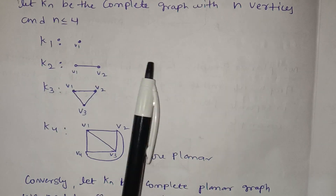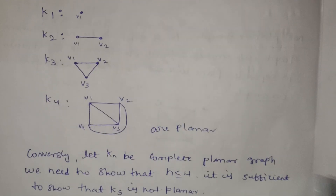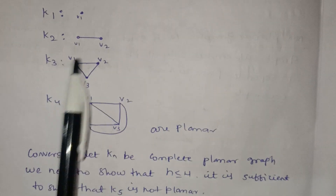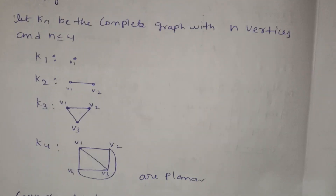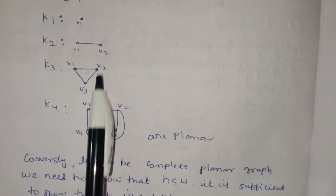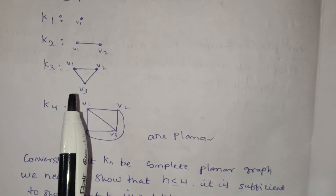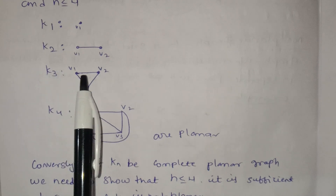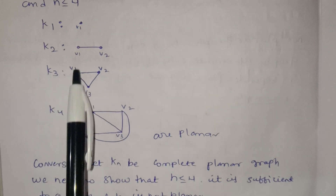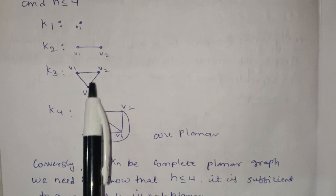Now K3 is the complete graph. The complete graph is the complete cycle form. So K3 has vertices V1, V2, V3 — there are 3 vertices. The edges are 1, 2, 3 — so there are 3 edges with vertices V1, V2, V3.